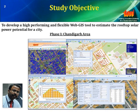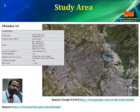Chandigarh was chosen as Phase 1 for this initiative because it is one of the model solar cities identified by the Ministry of New and Renewable Energy. TERI has developed a Solar City Master Plan for Chandigarh. We developed a tool to estimate each building's rooftop solar potential for the entire city. Our study covered entire Chandigarh as well as some parts of Mohali and Panchkula.